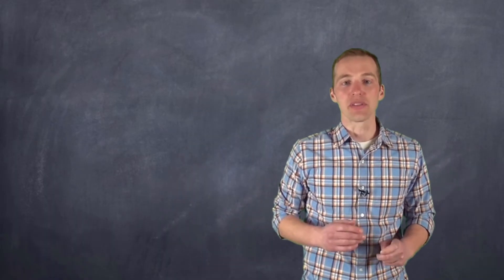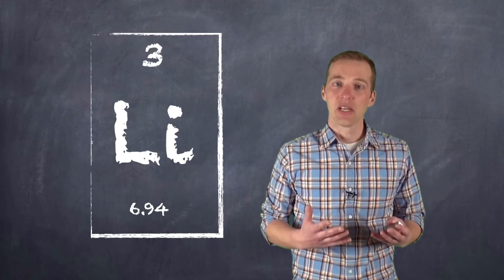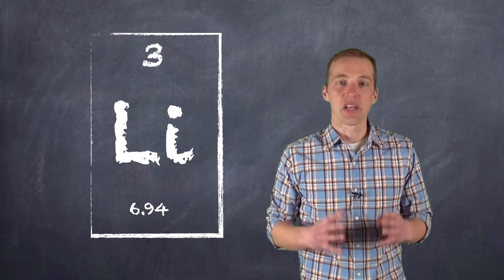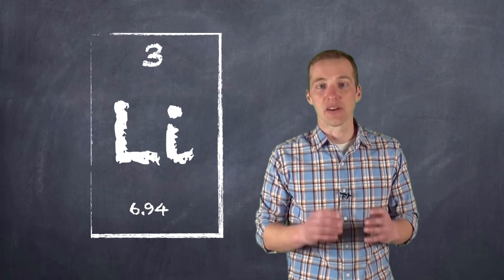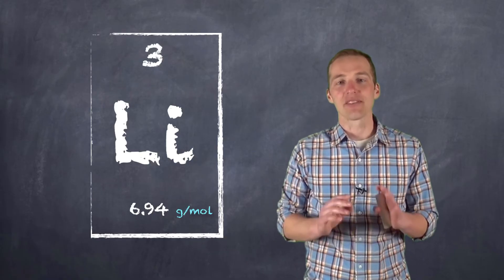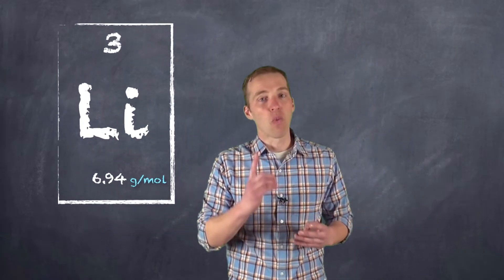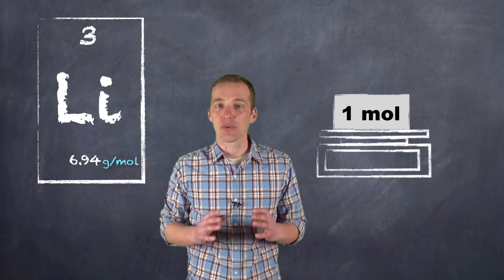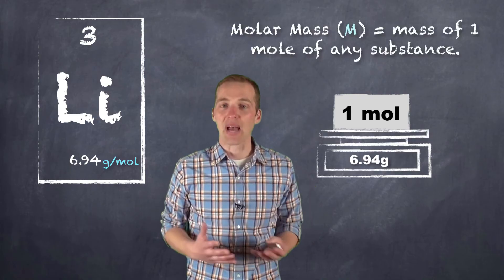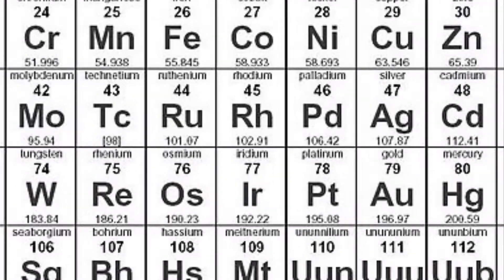So if we look at the periodic table, we notice that we have a symbol on there, and that symbol — let's say for lithium — gives us some information. Lithium is atomic number three, so we know that it has three protons, but we also see this mass number down here. The mass number gives us the average atomic mass of this particular atom and its weighted average of its isotopes, but it also gives us its molar mass — that is, the mass of one mole of this particular substance. So we know that lithium, if we have one mole of it — that is, 6.02 times 10 to the 23 atoms of lithium — it's going to have a mass of 6.94 grams, and we refer to this as its molar mass.